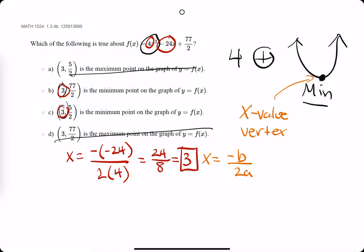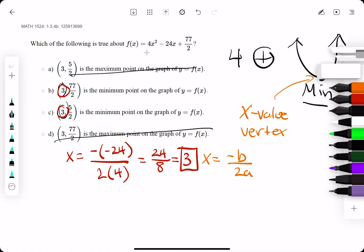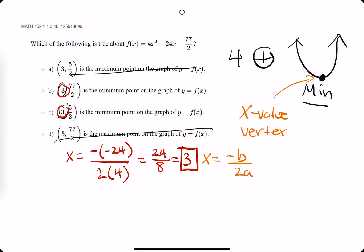So, how do we actually find the y value where the vertex occurs or where the minimum occurs? If we have the x value and we have this function up here, well, all we need to do is plug in this 3 into this function. So, I'm going to do it briefly by hand here. f(3) = 4 times 3² minus 24 times 3 plus 77 over 2.